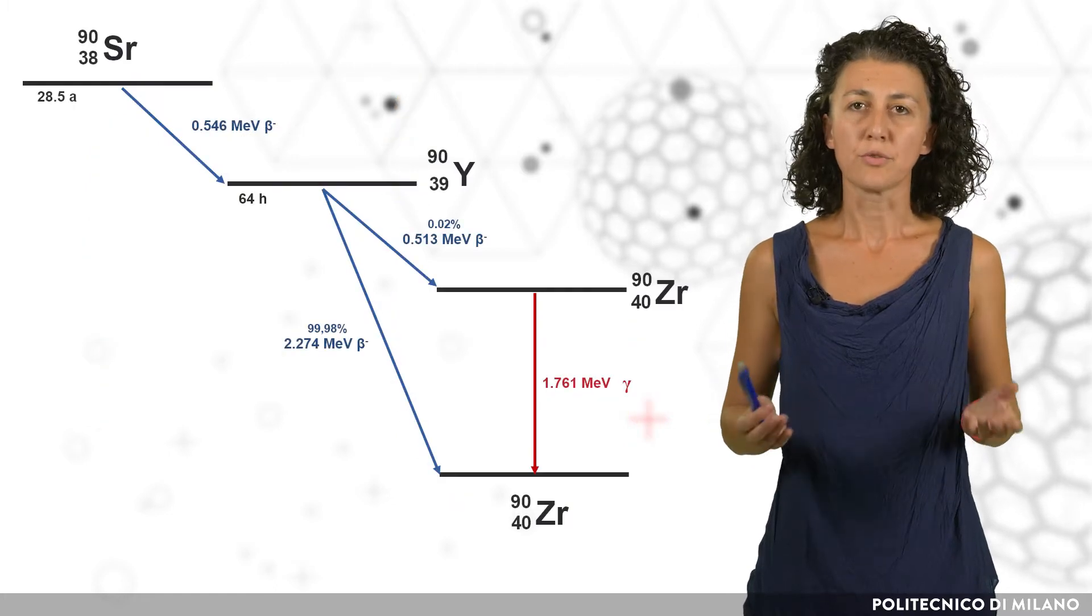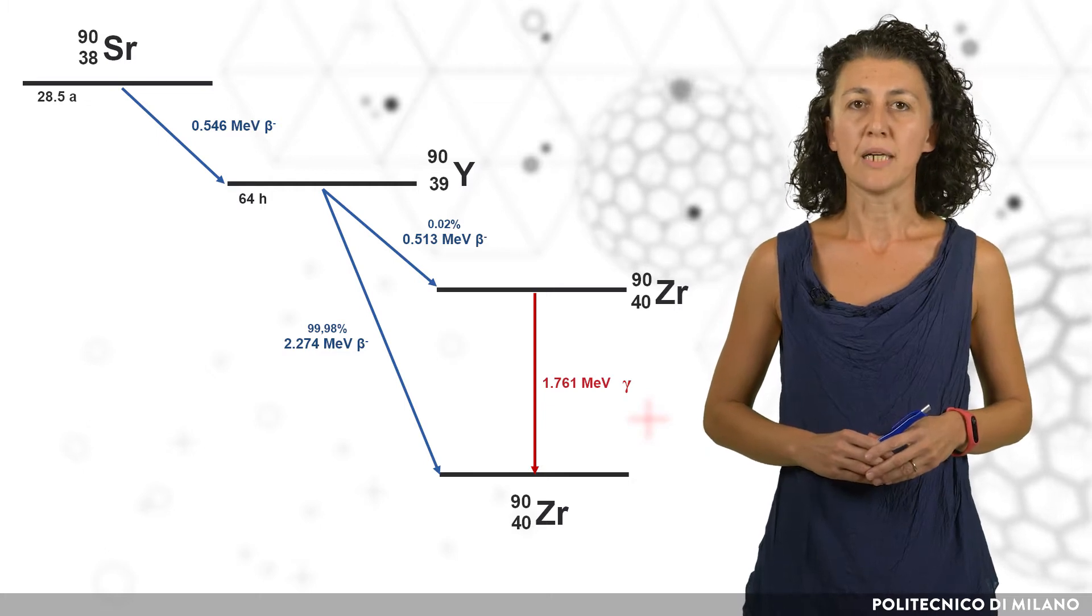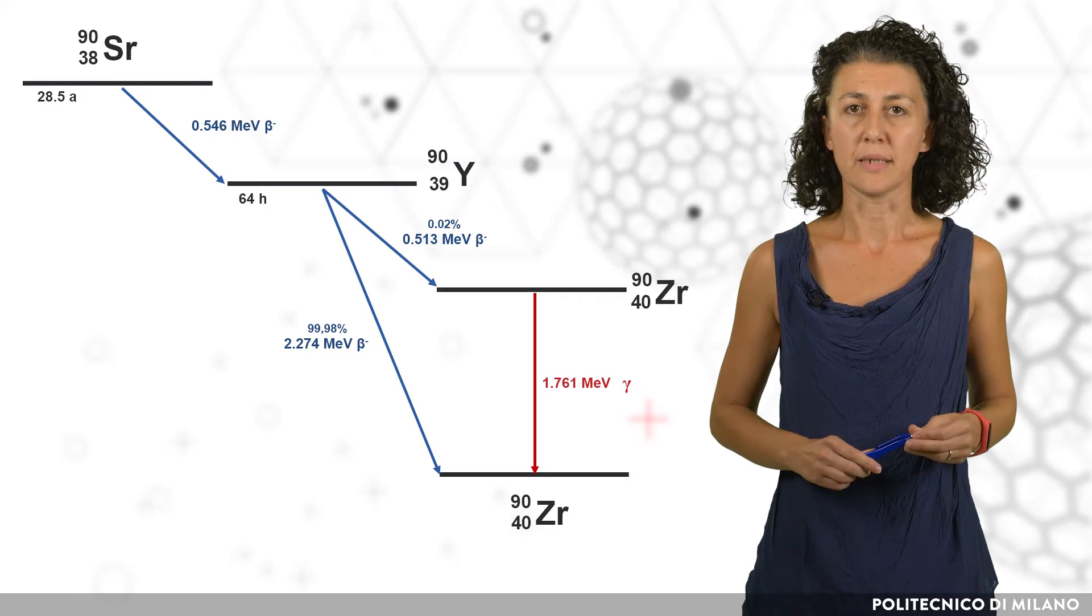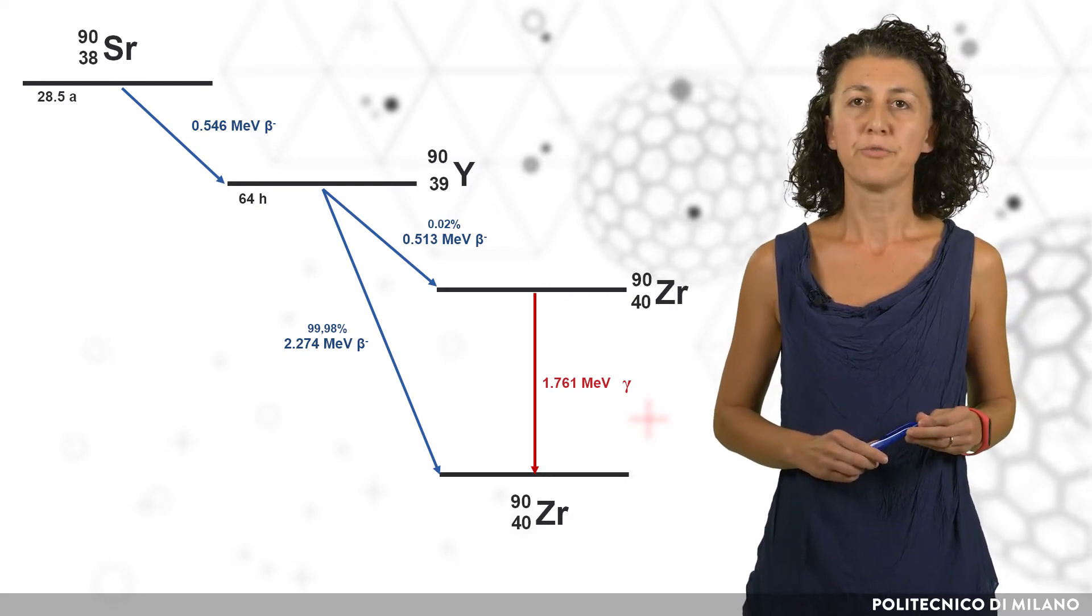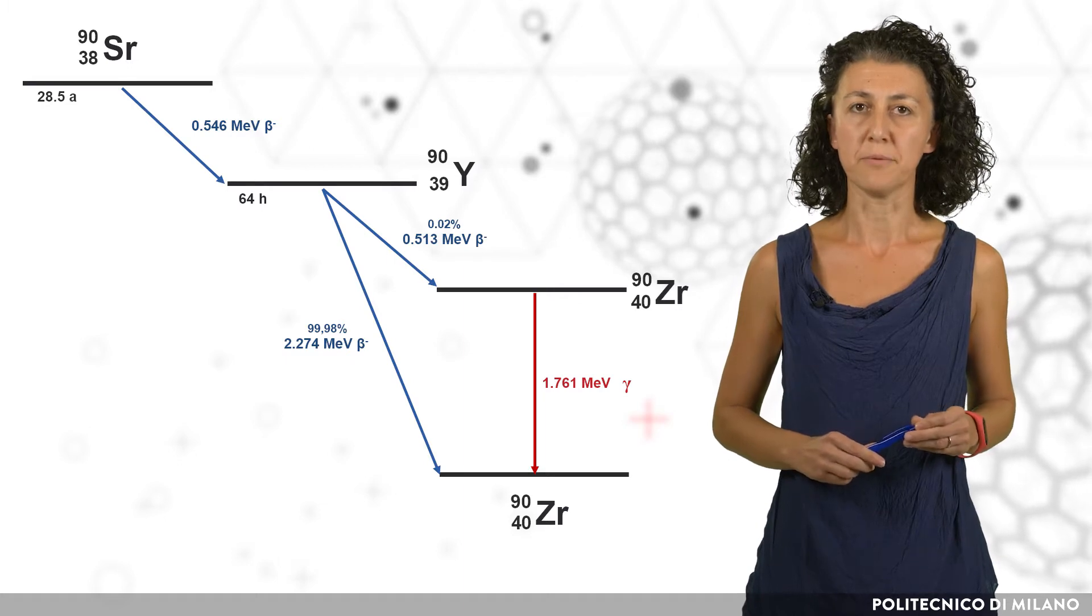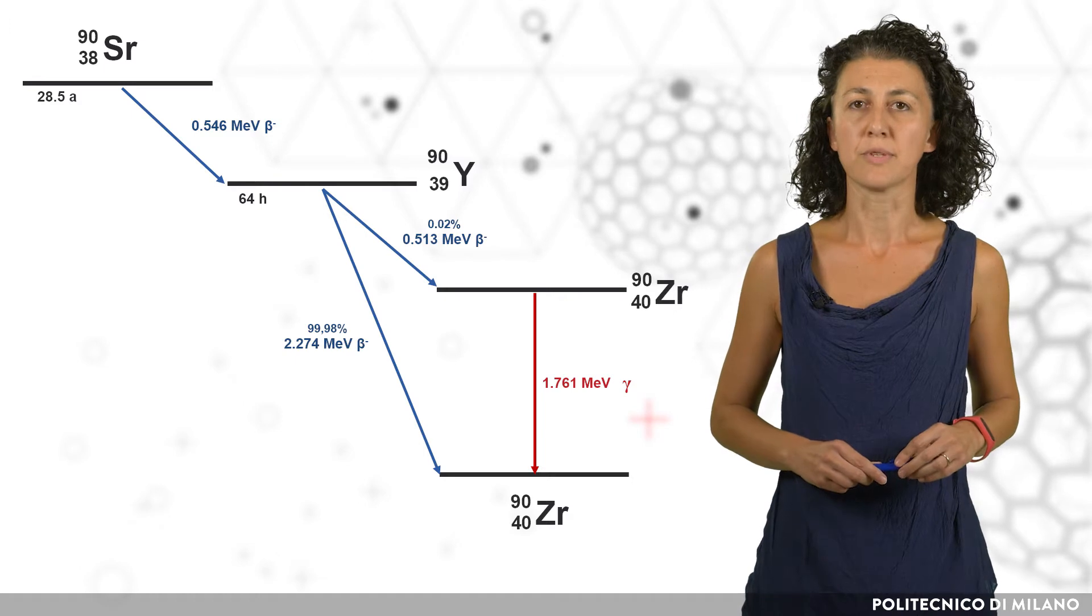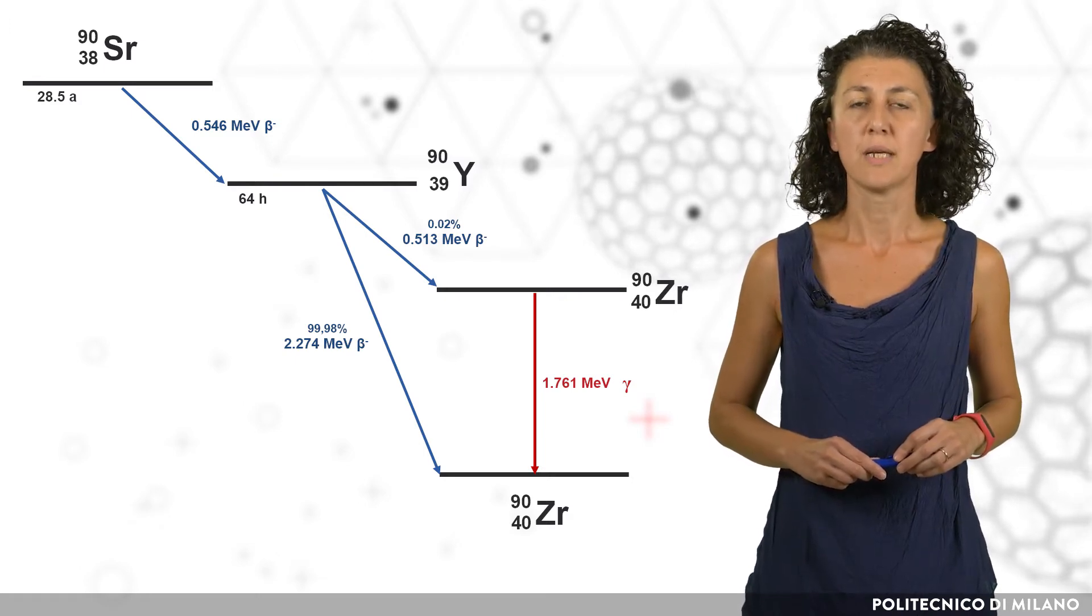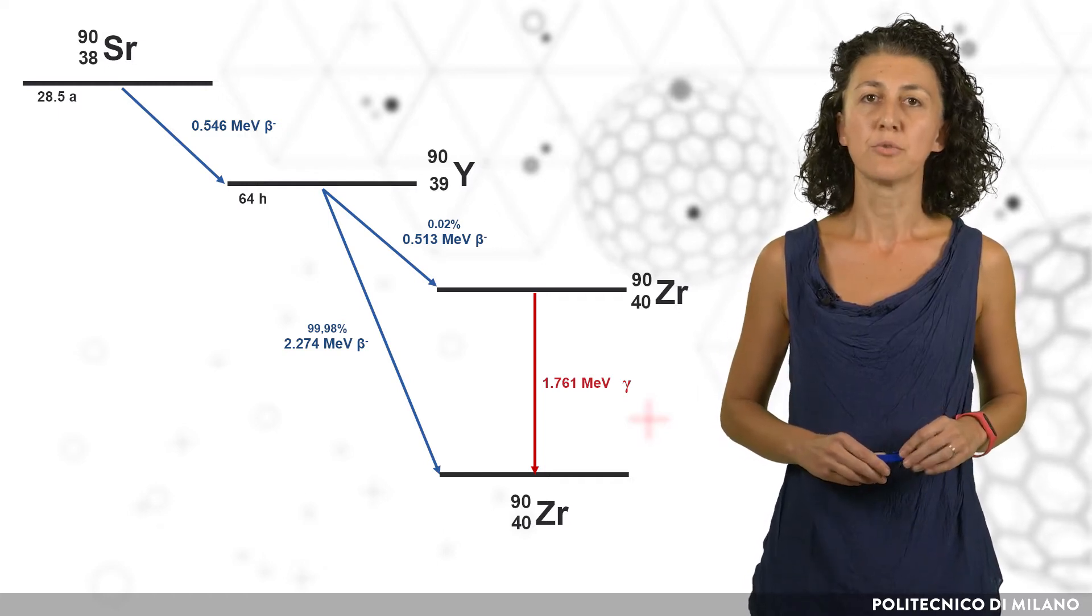Recalling the strontium-90 physical properties, it is a beta emitter with a half-life of about 29 years. It undergoes beta decay with a decay energy of 546 keV. It undergoes beta minus decay with a half-life of 64 hours and decay energy of about 2.3 MeV to stable zirconium-90.